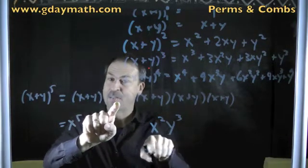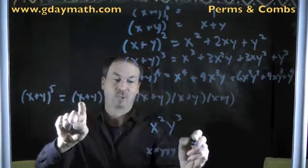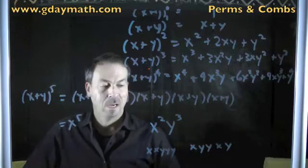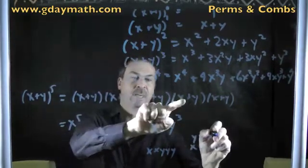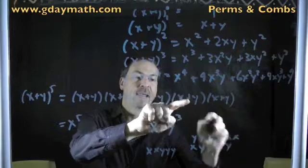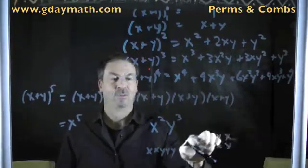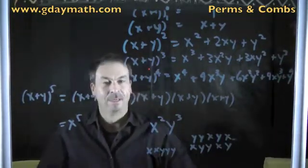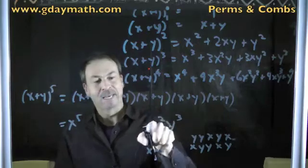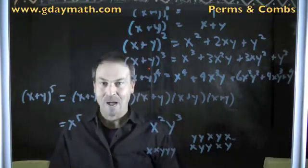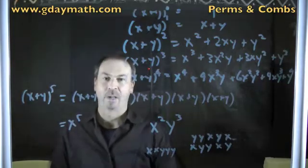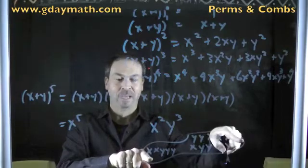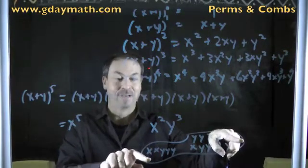But that could appear in other ways — it doesn't have to be in that order. Maybe I could choose x, then y, then y, then x, then y — that would also be x squared y cubed. Or y, y, x, y, x — three y's and two x's — that's also x squared y cubed. So x squared y cubed will appear lots of different times. The question is: how many ways will x squared y cubed appear? It appears in all the ways I could write an expression of five letters involving two x's and three y's.